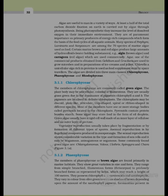Certain marine brown and red algae produce large amounts of hydrocolloids, i.e. water-holding substances. Examples include alginate from brown algae and carrageenan from red algae, which are used commercially. Agar, one of the commercial products obtained from Gelidium and Gracilaria, is used to grow microbes and in preparation of ice creams and jellies. Chlorella, a unicellular alga rich in proteins, is used as a food supplement even by space travellers.